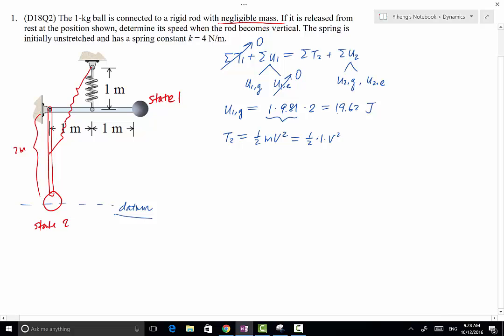In this case, we've chosen this location to be the datum, therefore U2g is 0. We only have U2e. And U2e equals to 1 half ks squared.